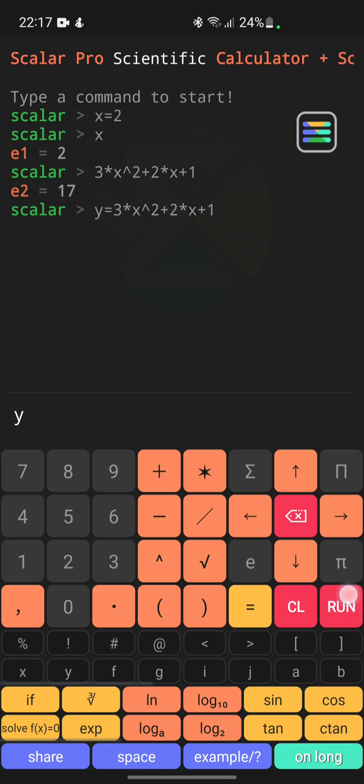Next, let's present the value of y by entering y and clicking run. As a result, we get the expected 17. Now let's change the value of the argument x by entering x equals 3 and clicking run. We then re-verify the value of the argument y, which depends on the argument x. We type y and click run. This time, the result is 34. Cool.